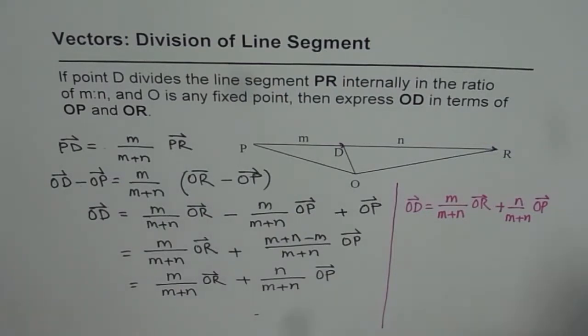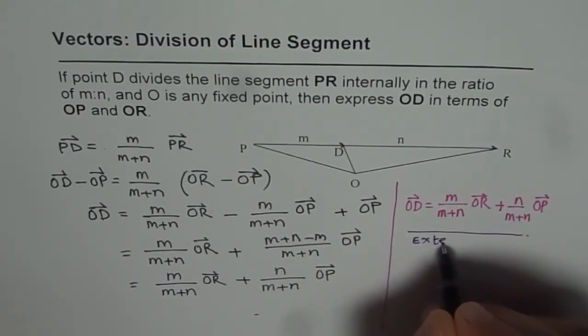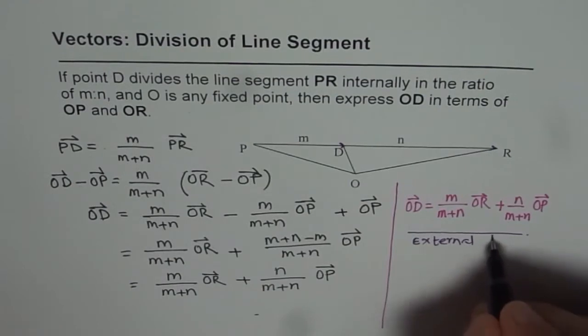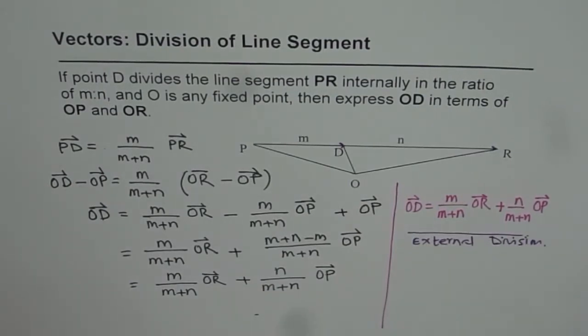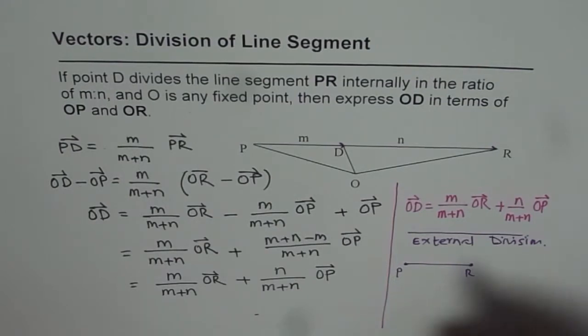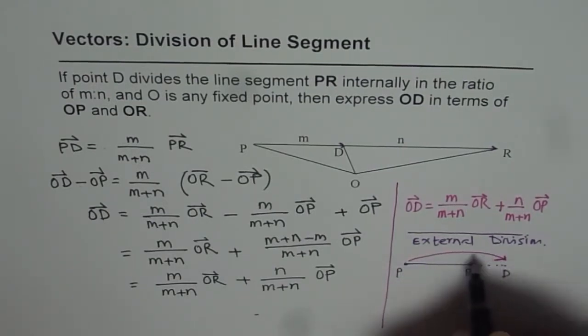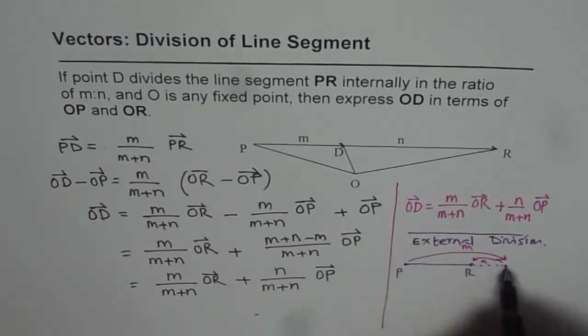Now as an exercise, what you can do is external division. External division really means that we are given a vector P and R, and we are going to divide with point D which is outside in the ratio of M to N.